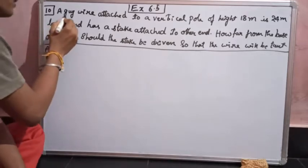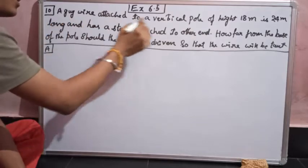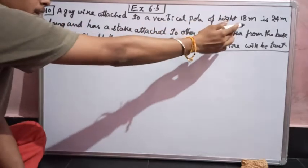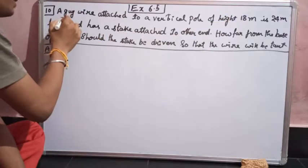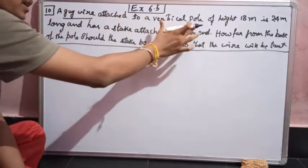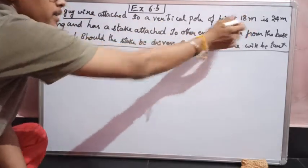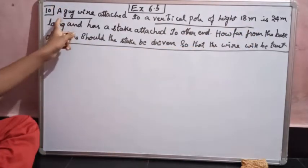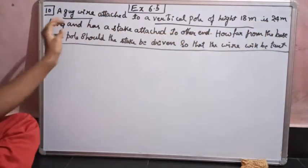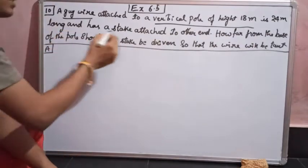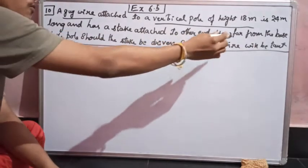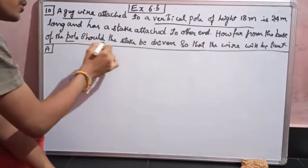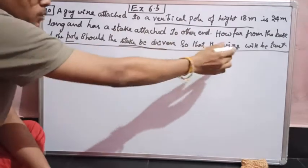Here it is given that a guy wire attached to a vertical pole of height 18 meters is 24 meters long and has a stake attached to the other end. How far from the base of the pole should the stake be driven so that the wire will be taut?